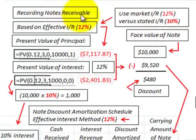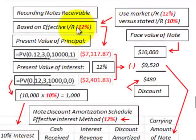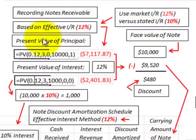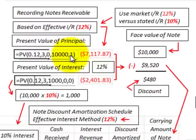First we have to determine how we would record this notes receivable to determine the impairment. Based on the effective interest rate of 12%, we use the market rate of interest versus the stated rate of 10%. We need to determine the present value of the principal and the present value of the interest payments. For the present value of the principal, we discount $10,000 back for 3 years at 12%, which gives us $7,117.